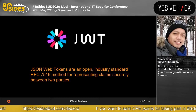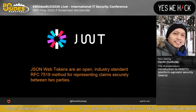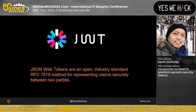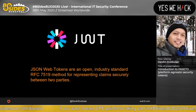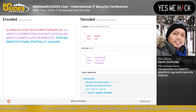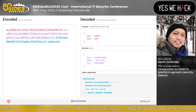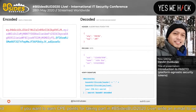Just to refresh our memory, here's JWT and some other things. This is JSON Web Tokens — an open industry standard RFC 7519 method for representing claims securely between two parties. Here's a sample JWT token from the JWT website. As you can see, it's divided into three parts: the header, payload, and signature.